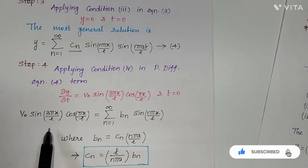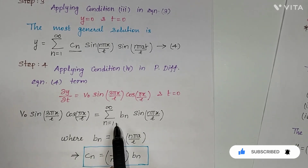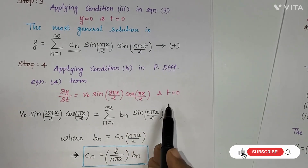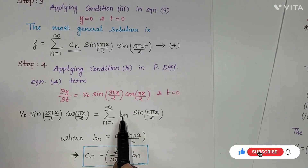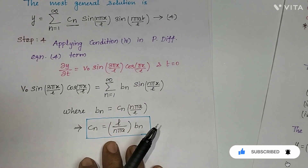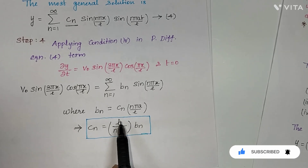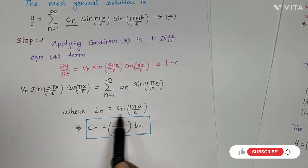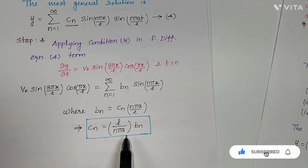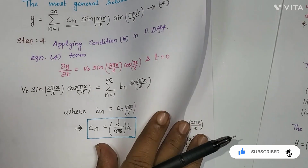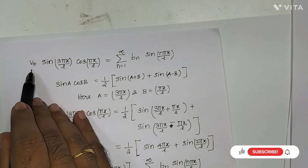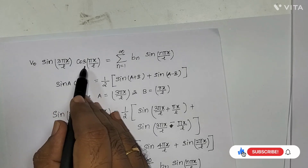After substituting condition 4 and setting t = 0, we get: v0·sin(3πx/L)·cos(πx/L) = Σ(n=1 to ∞) bn·sin(nπx/L), where bn = cn·nπa/L. So cn = L/(nπa)·bn. Now we must evaluate the left-hand side using a trigonometric identity.